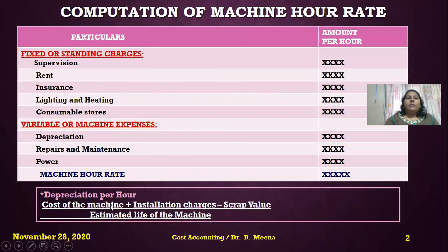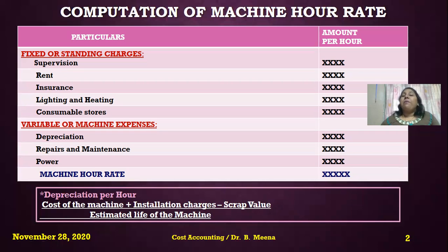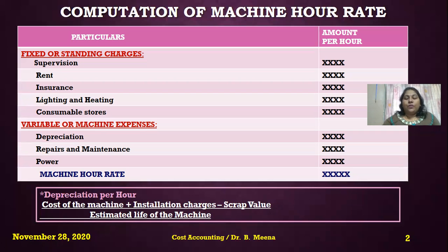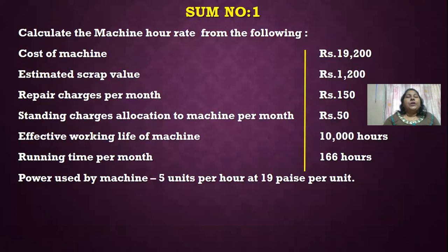Before going into this format, we must do the working notes. Depreciation per hour — the formula to calculate depreciation per hour is: cost of the machine plus installation charges, minus scrap value, divided by estimated life of the machine. Click the 'i' button to watch my previous video for a clear and detailed understanding of this format.